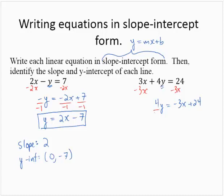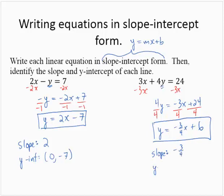Dividing each term by the coefficient on y, which in this case is 4, yields y equals negative 3 fourths x plus 6. That's slope-intercept form with slope negative 3 fourths and y-intercept 0, 6.